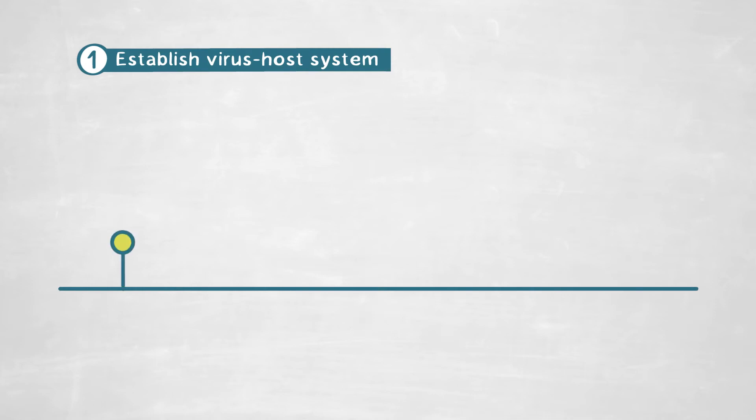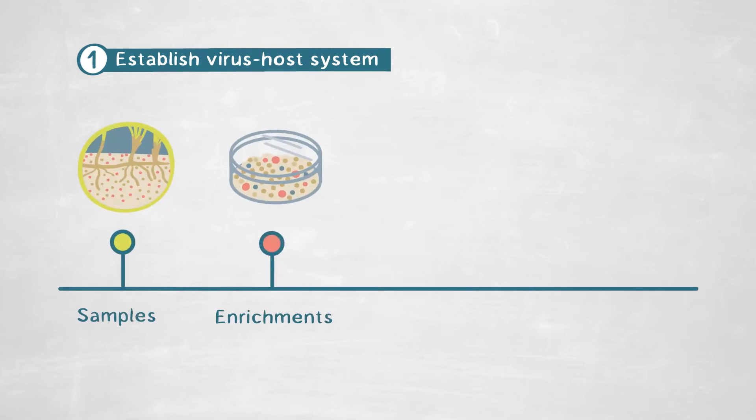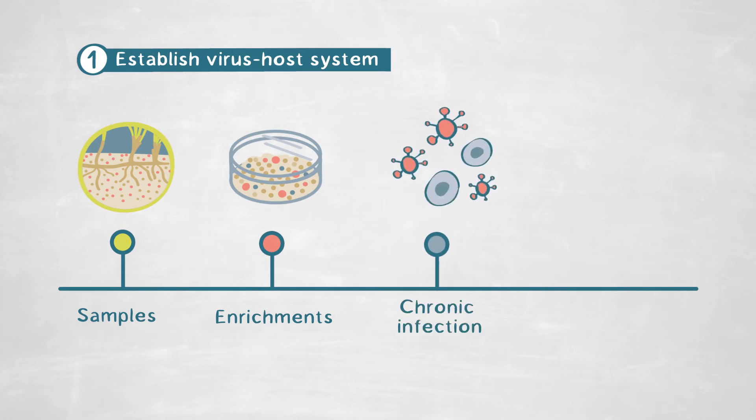For this, we first have to go to the field and take environmental samples to try to enrich archaeal viruses. Because chronic infections are rather rare and very complicated to detect, we have to develop specific methods to detect them in these samples. We went to the field and took environmental samples to generate enrichments of viruses that infect these archaea and produce chronic infection.